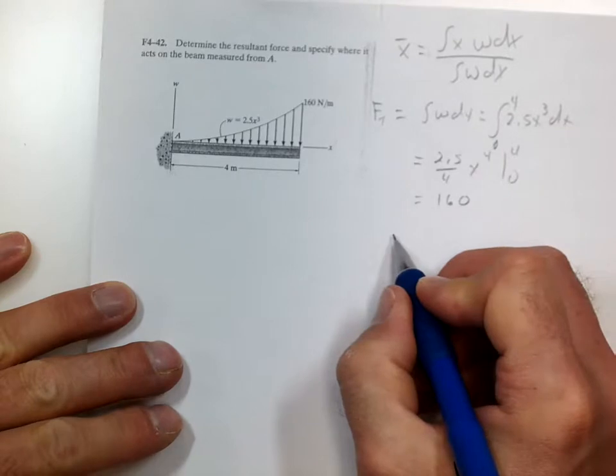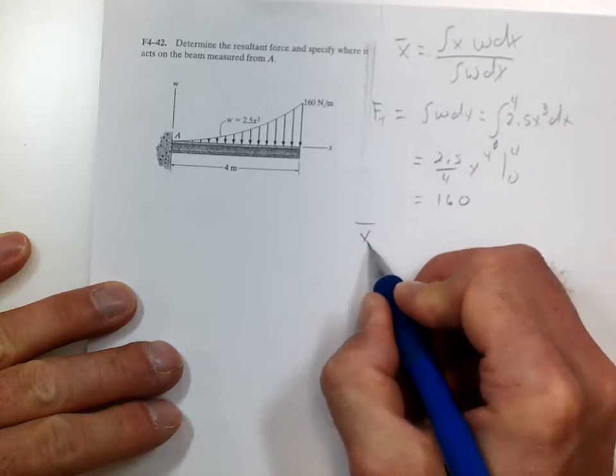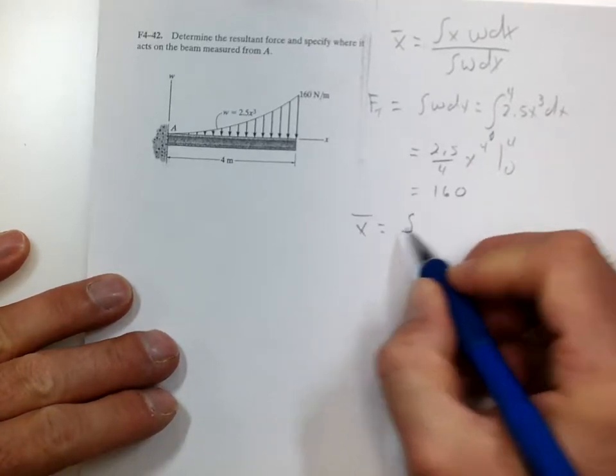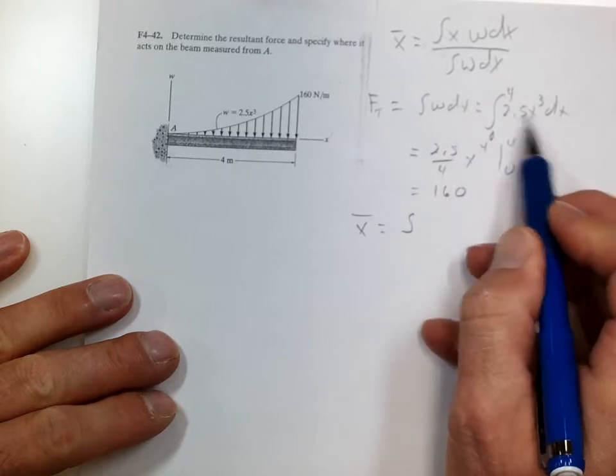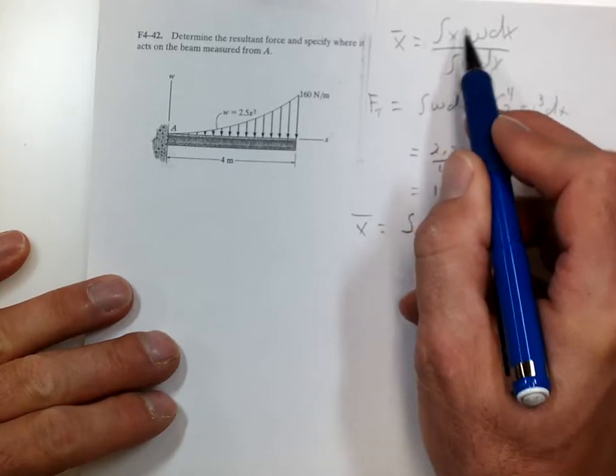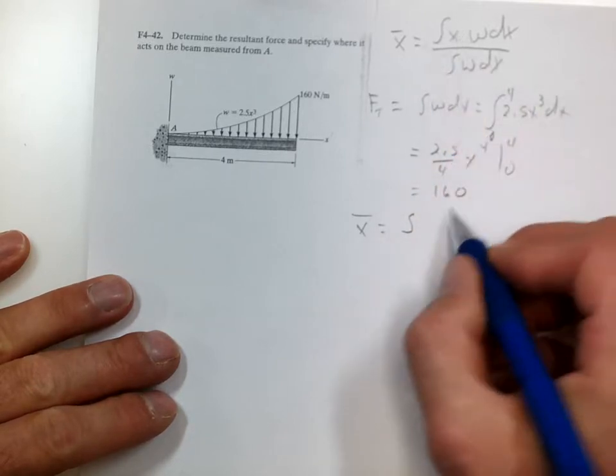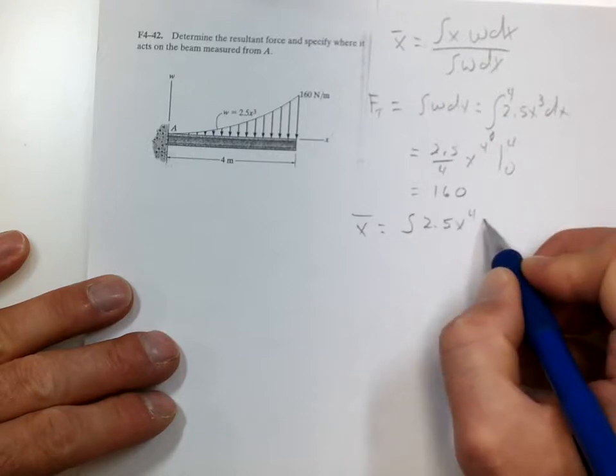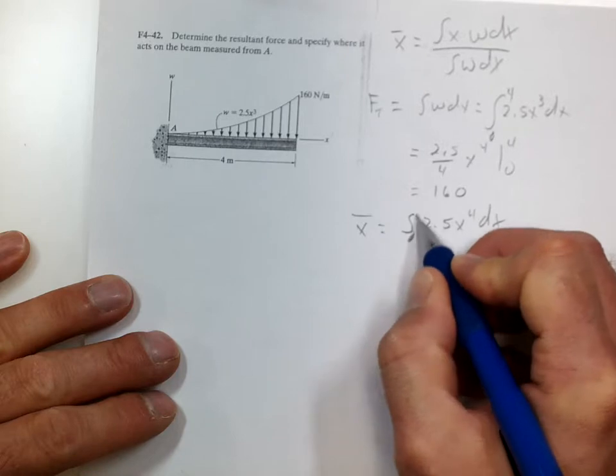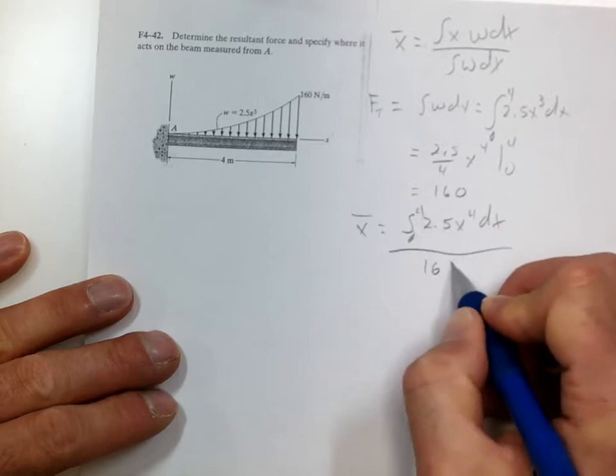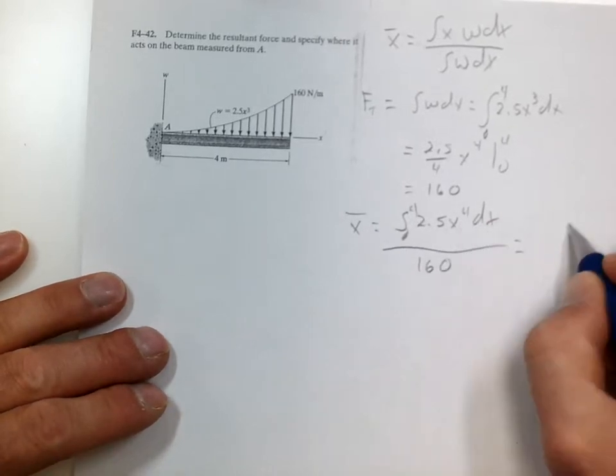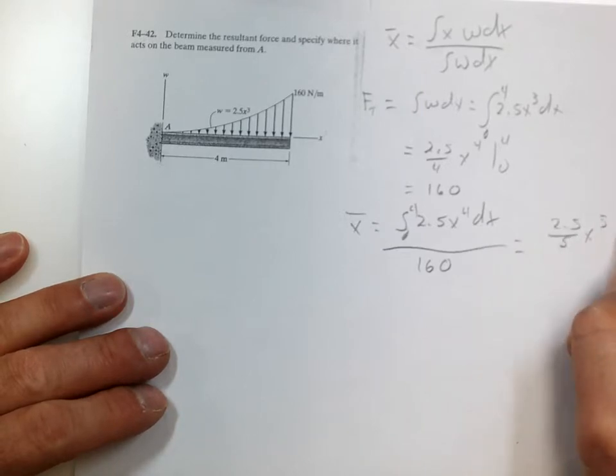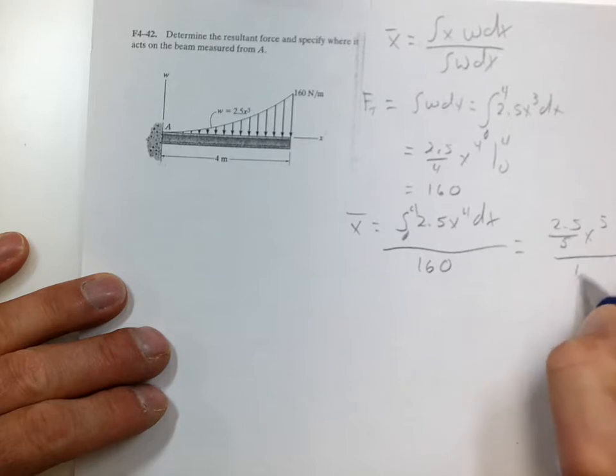So then we'll do x-bar. And that's the integral, same as this, 2.5, except we're going to throw in another x. So that's 2.5x to the 4th dx from 0 to 4 over 160. So that's 2.5 over 5x to the 5th from 0 to 4 over 160.